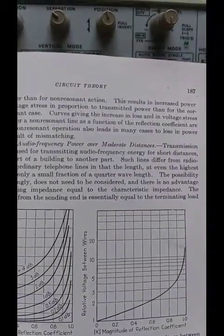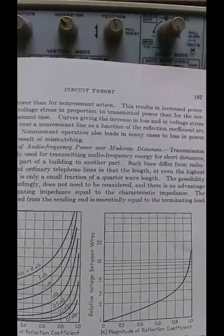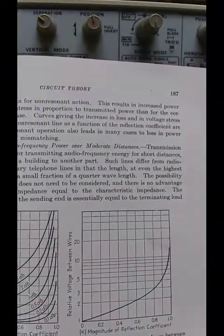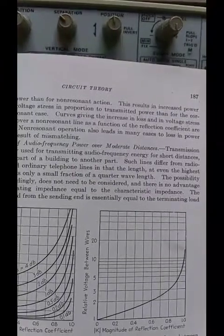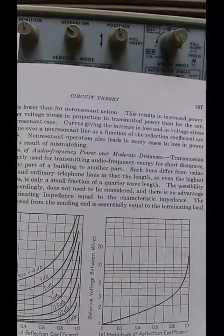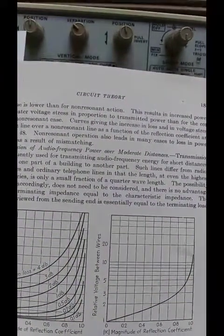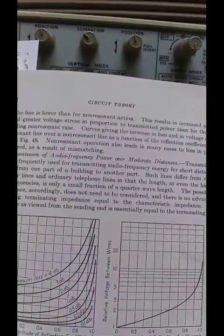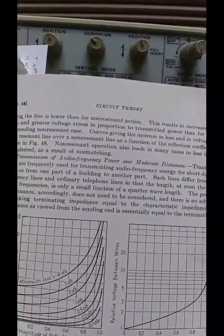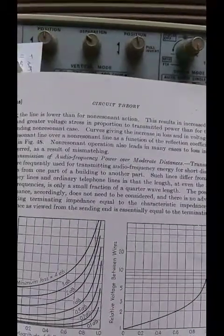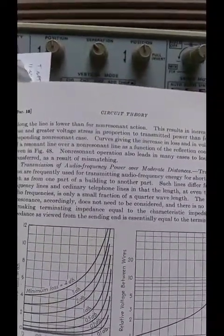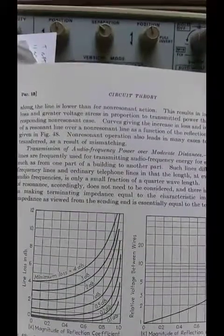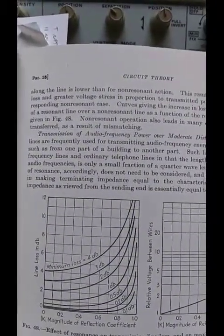Curves giving the increase in loss in voltage stress over resonant line over non-resonant line as a function of reflection coefficient. That's SWR. Are given in figure 48. Non-resonant operation also leads in many cases to loss in power transferred as a result of mismatching. And again, understand that's referring to reactive circuits and transmission lines. An improperly terminated transmission line appears to become reactive.